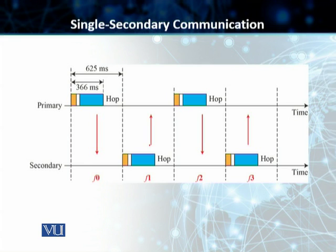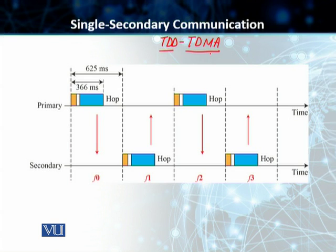Bluetooth is a wireless LAN technology that uses a particular variant of TDMA — Time Division Multiple Access. We call this variant TDD, which means Time Division Duplex. It uses TDD Time Division Duplex TDMA technology, and it is a kind of half-duplex communication. In this case, the sender and receiver can both send and receive — the primary and secondary parties can both send and receive — but not at the same time.